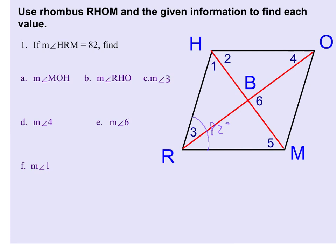And we want to find each of these other angle measures. So the first one, letter A, is the measure of angle MOH. And because we know that opposite angles are congruent in a rhombus, if angle HRM is 82 degrees, then also angle MOH has to be 82 degrees, because that's this angle here.